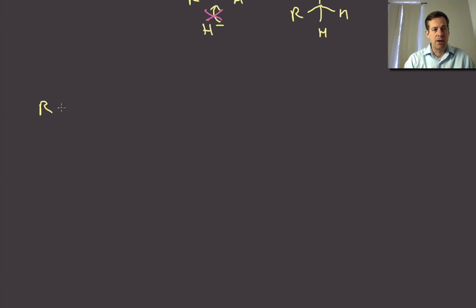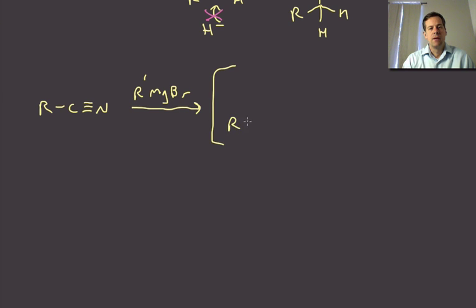It turns out that if we take a nitrile and we add an alkyl Grignard to it—instead of a hydride we add an organometallic—we will get to an intermediate that's very similar. Instead of hydride, we've just added our carbanion species. But again, this is going to be resistant to add a second one, so it's just going to sit here at this point. Then when we work this up with acidic water, we get to the ketone.